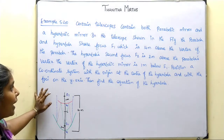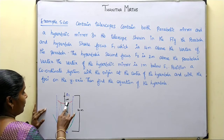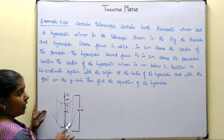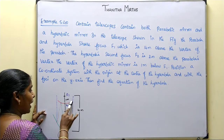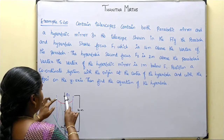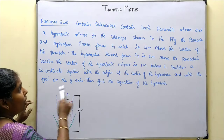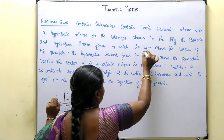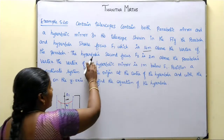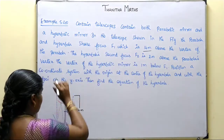The telescope has both a parabolic mirror and a hyperbolic mirror. The f1 focus is shared by both the hyperbola and the parabola, and f1 is 14 meters from the vertex of the parabola. The hyperbola's second focus f2 is 2 meters above the parabola vertex.